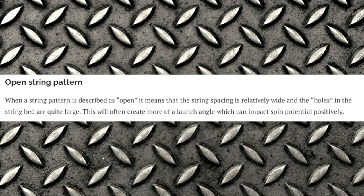Open string pattern — when described as open, the string holes are wider apart, creating more room for string movement and more spin potential. The drill pattern — how the grommet holes are spaced — affects this. It doesn't add spin on its own; you still have to generate spin by hitting the ball. You see open patterns in something like a 100 sq in 16x19, versus a tighter 95 sq in 18x20 pattern.